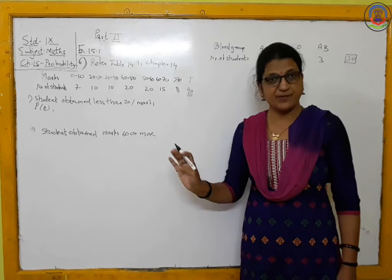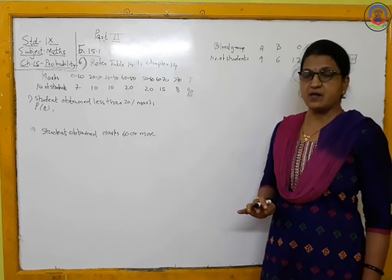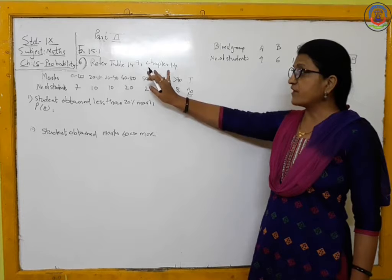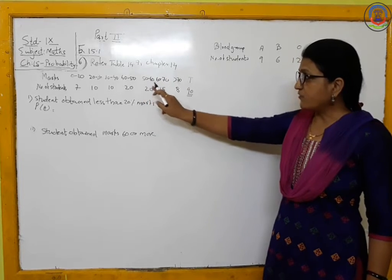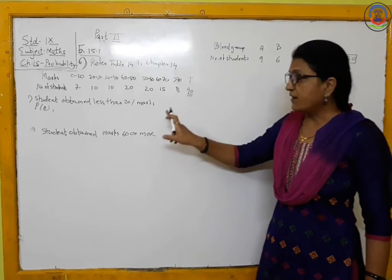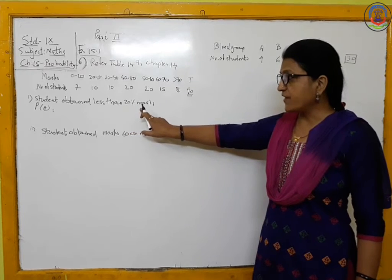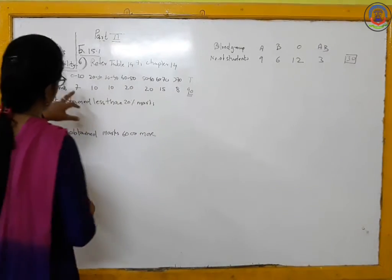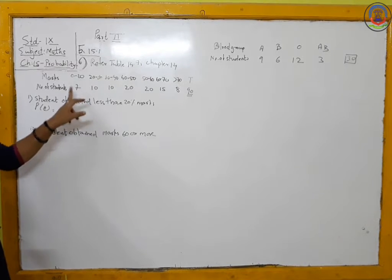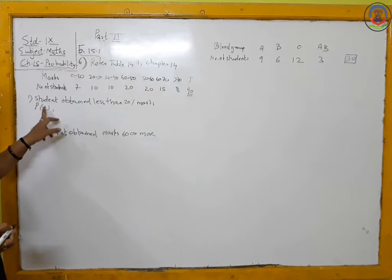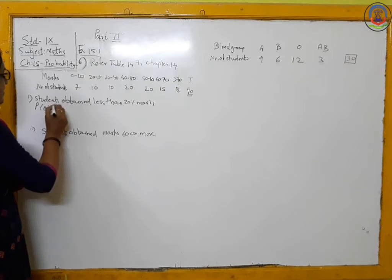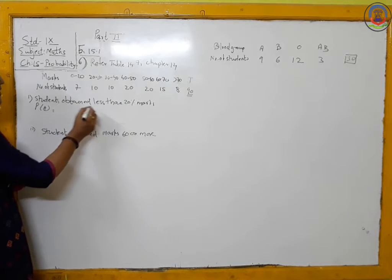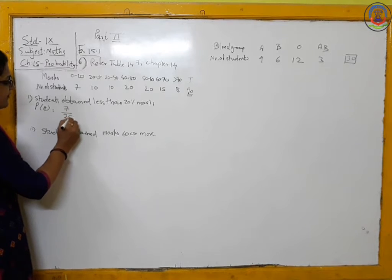Some questions of Exercise 15.1 are related to Chapter 14, Statistics. Since we have not finished that chapter yet, we will directly use the data given there. From Table 14.7, the marks obtained by 90 students are given — total number of students is 90. We have to find the probability that a student obtained less than 20% marks. Seven students got less than 20% marks, so probability of event A = 7/90.